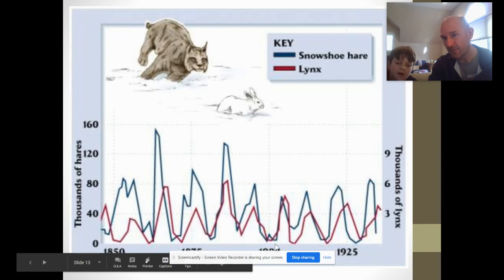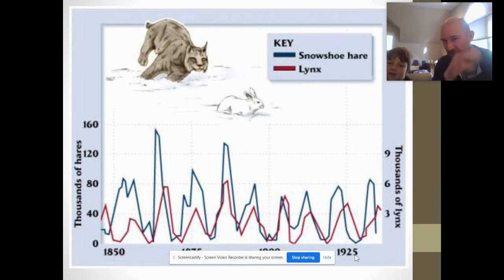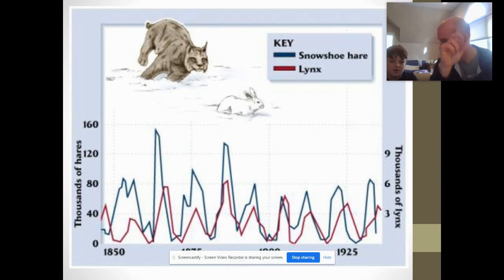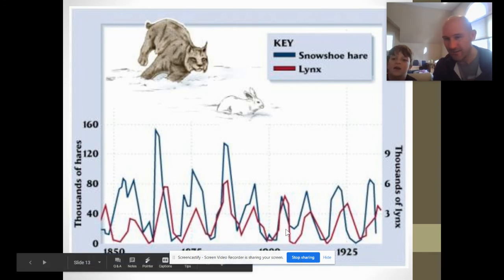And that's our presentation for the day. Thanks for watching. The x-axis shows years from 1850 to 1925. The snowshoe hare can hide in the snow, but the lynx is faster and has a very good sense of smell, so it can still find them.